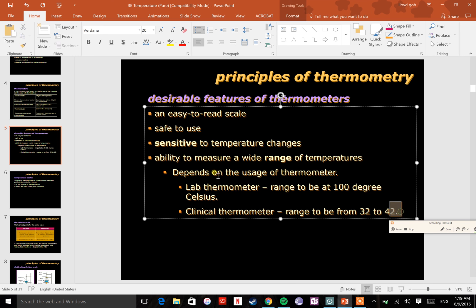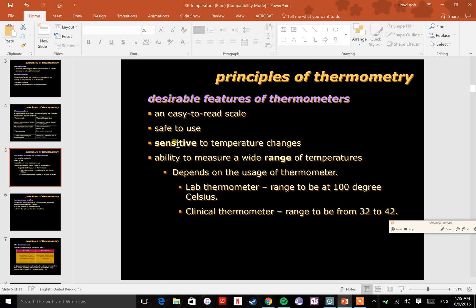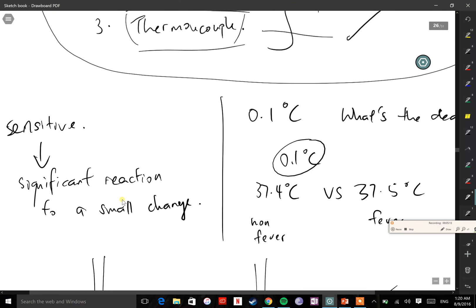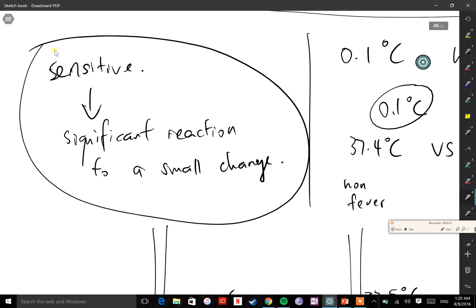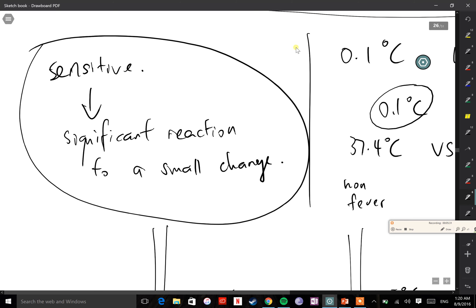I'm quite sure these are not in your notes, so you may want to write it down. When we talk about range, it really depends on the usage of the thermometer. If it's a lab thermometer, we want it to be at 100 degrees Celsius range. But a clinical thermometer only needs to be at a 10-degree range from 32 to 42. We don't really need to measure 30 degrees Celsius - I don't think any human is at 30 degrees. And if anyone hits 42, it's dangerous enough; you don't need to continue measuring that person. Now, what is sensitive then?